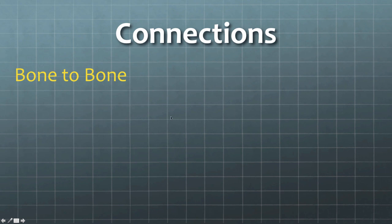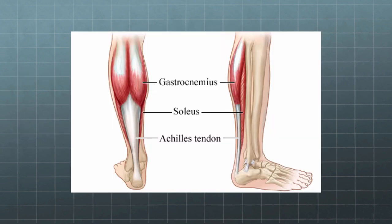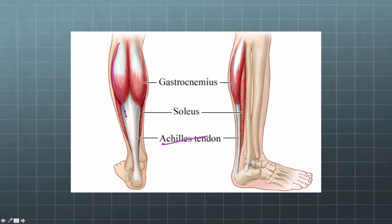There are two basic ways bones are connected: bone-to-bone connections are called ligaments, and muscle-to-bone connections are called tendons. The most well-known tendon is the Achilles tendon — the strands run way up into your calf muscle and then concentrate down at the very bottom right where your ankle is, making it very strong.